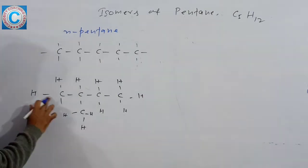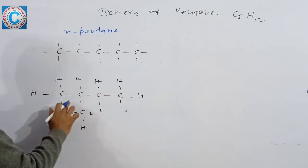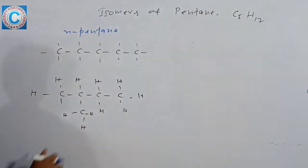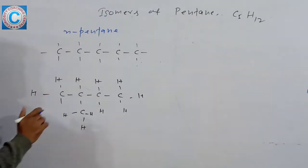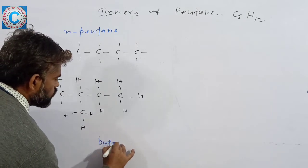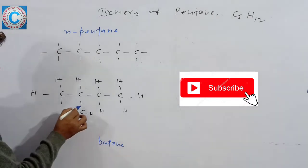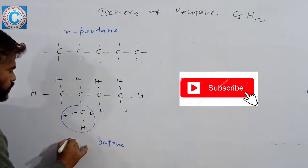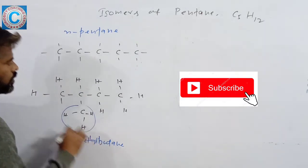Here, the longest chain is the chain of 4 carbons — 1, 2, 3, 4. So the longest chain is of 4 carbons, so it's butane, and there is a methyl group at the second carbon. So this is 2-methylbutane.